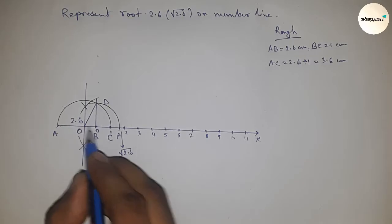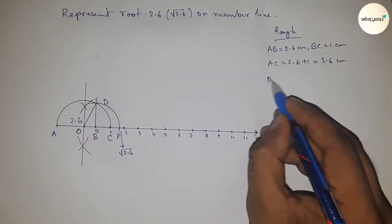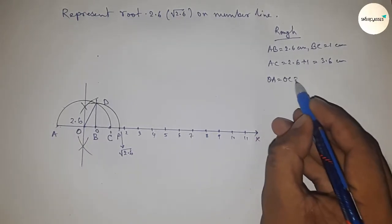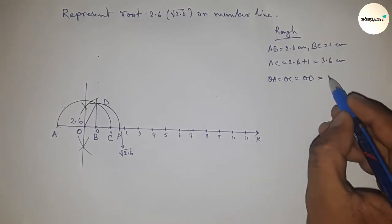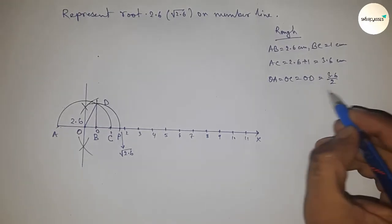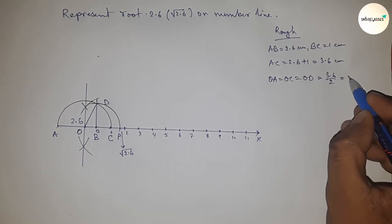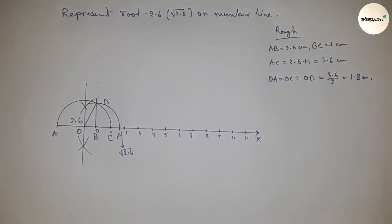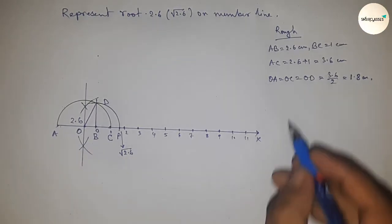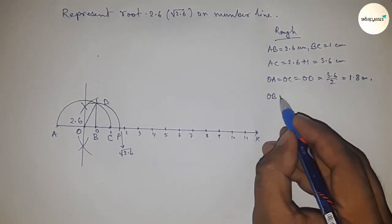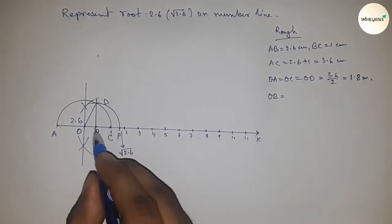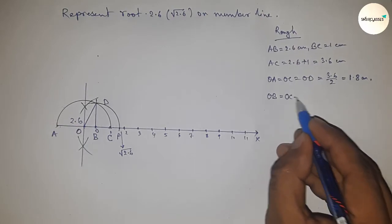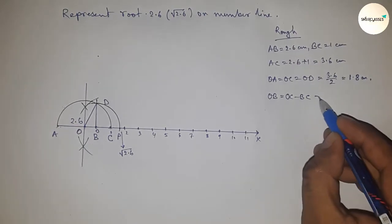Now radius OA, OC, and OD, so OA equals OC equals OD equals 3.6 by 2 centimeters, so equals 1.8 centimeters. Next, OB equals, we can write OC minus BC, so putting the value of OC and BC, so this is 0.8 centimeters.